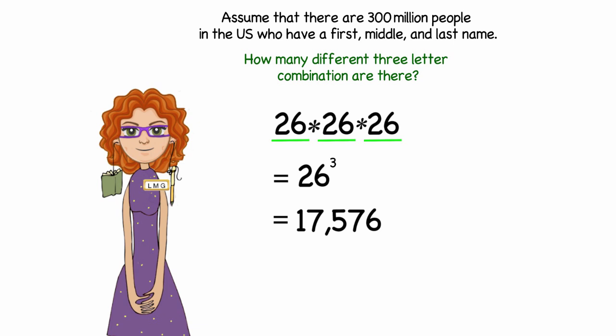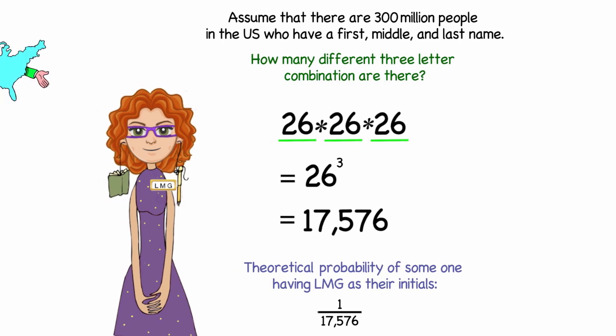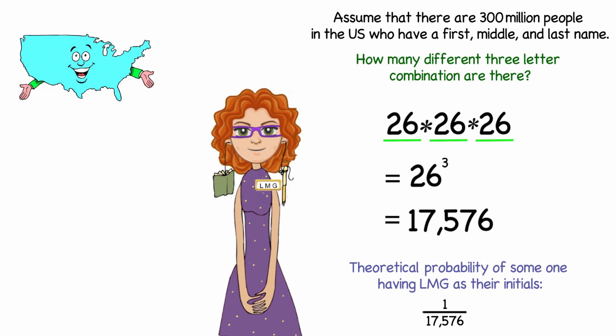If we assume that all possible three-letter initials are equally likely, what is the probability that someone will have my initials, LMG? Well, that would be 1 out of 17,576. And about how many people in the United States would you expect to have the initials LMG?